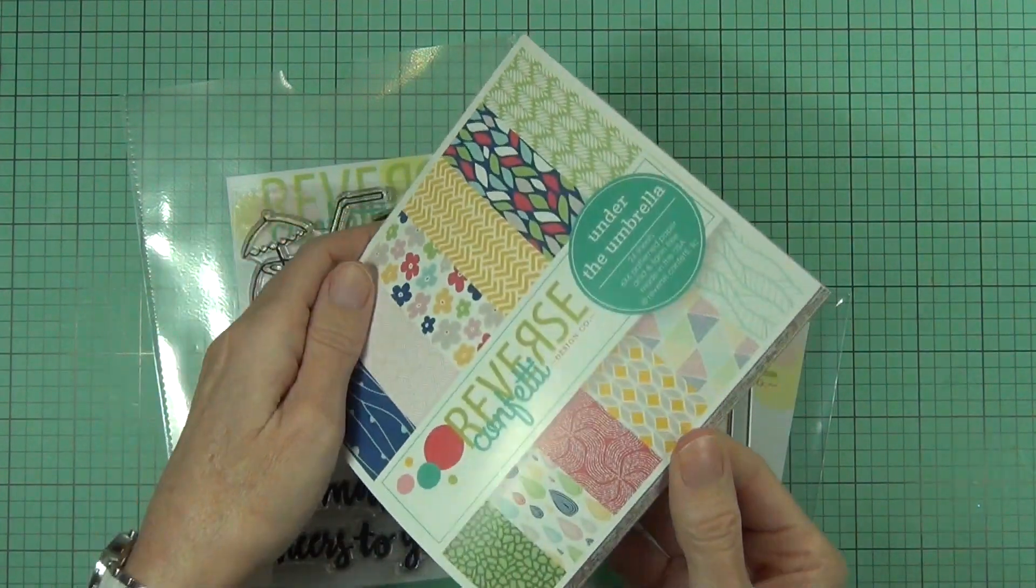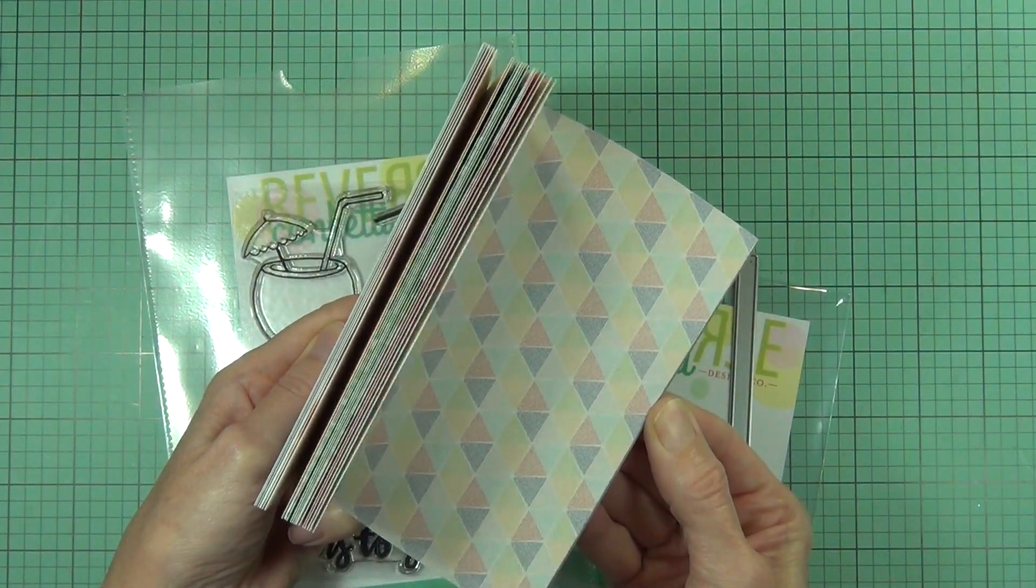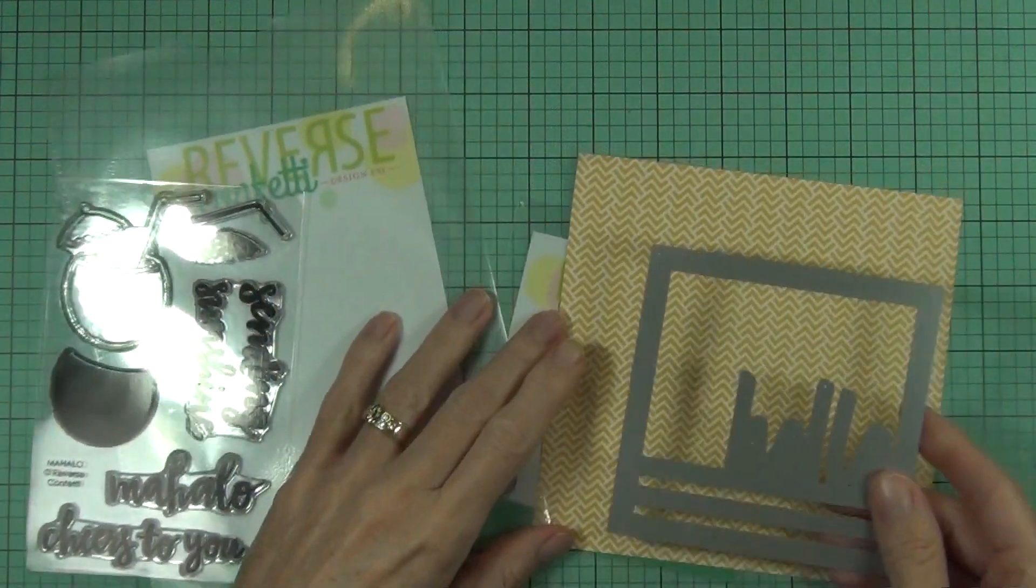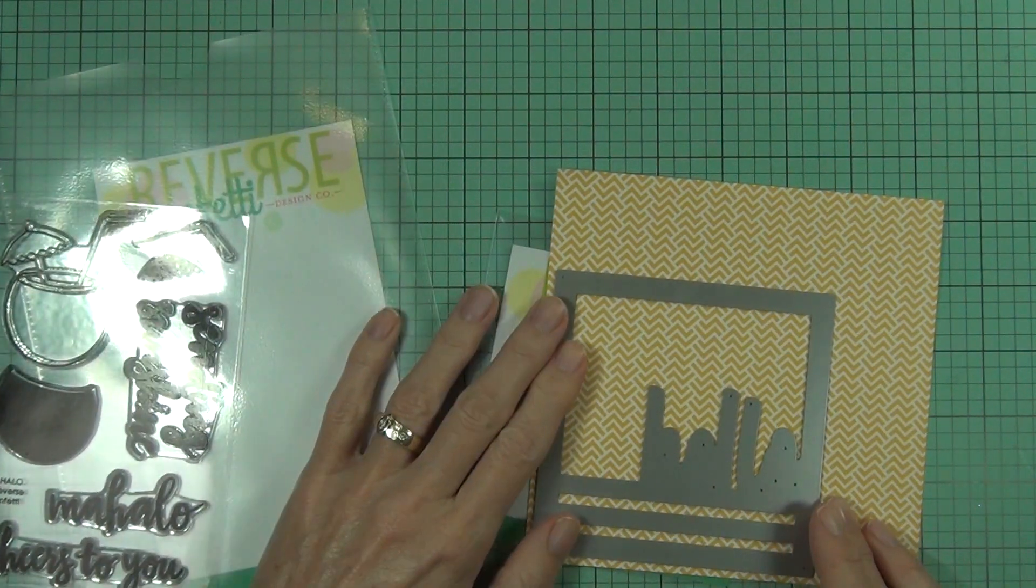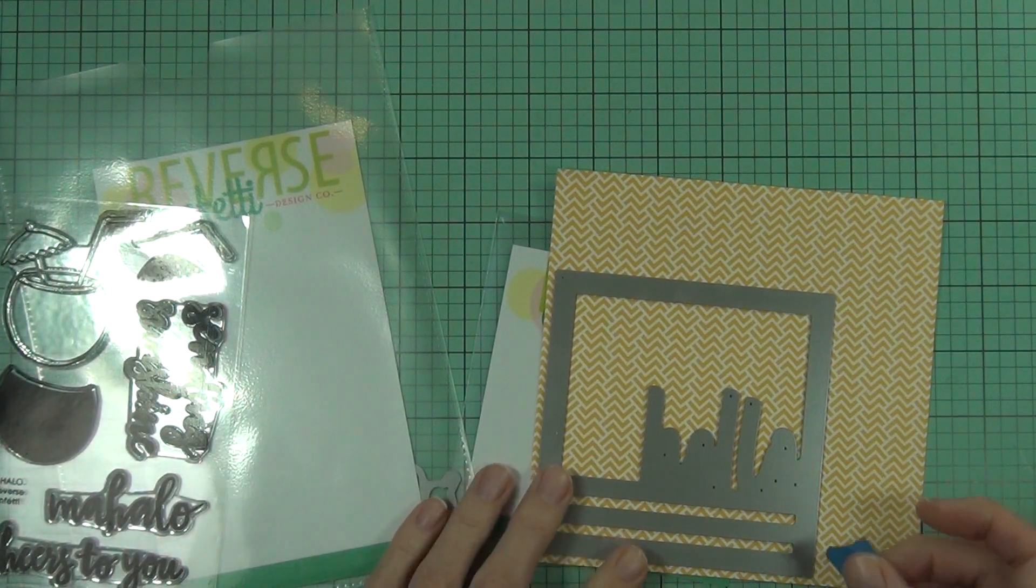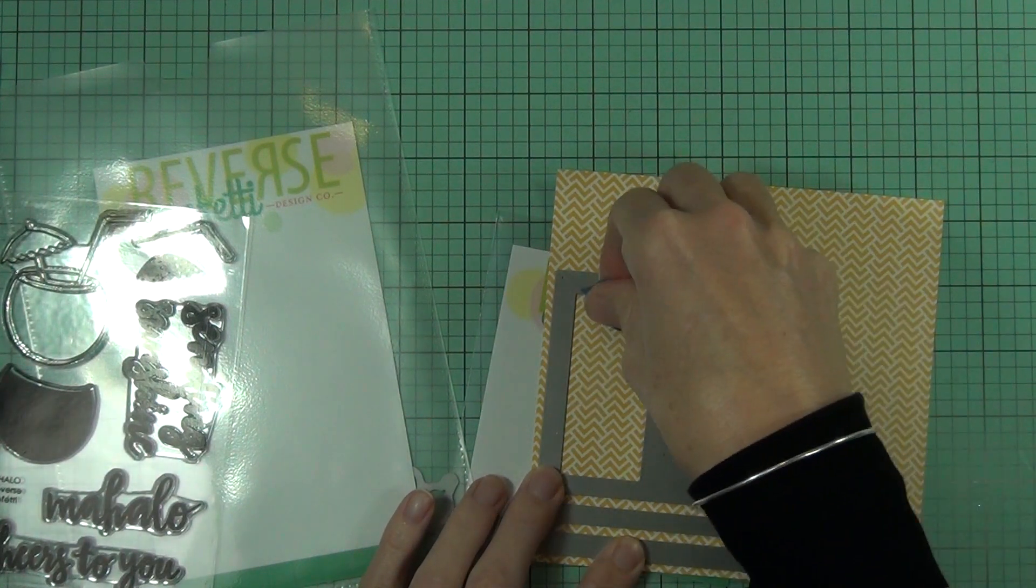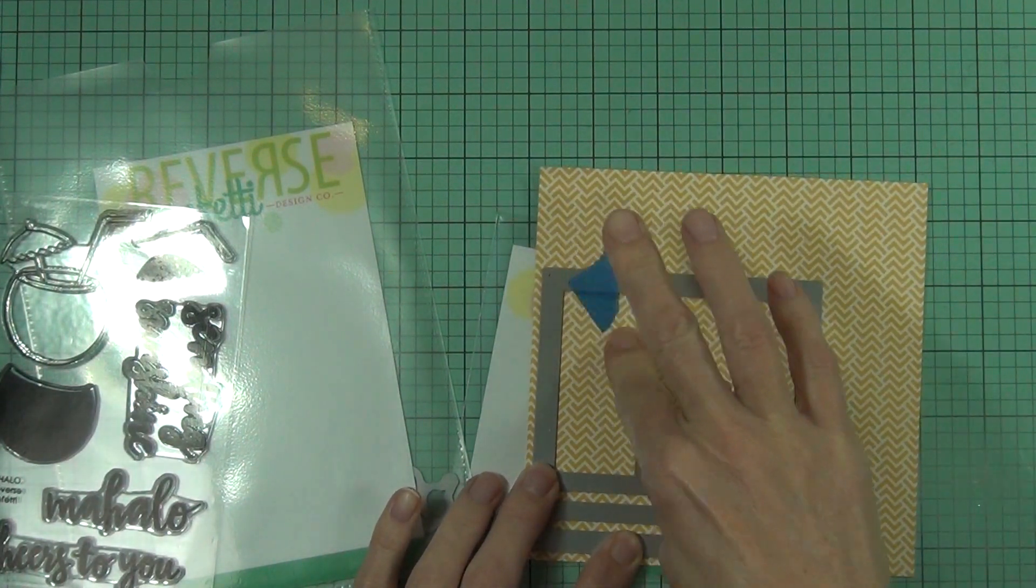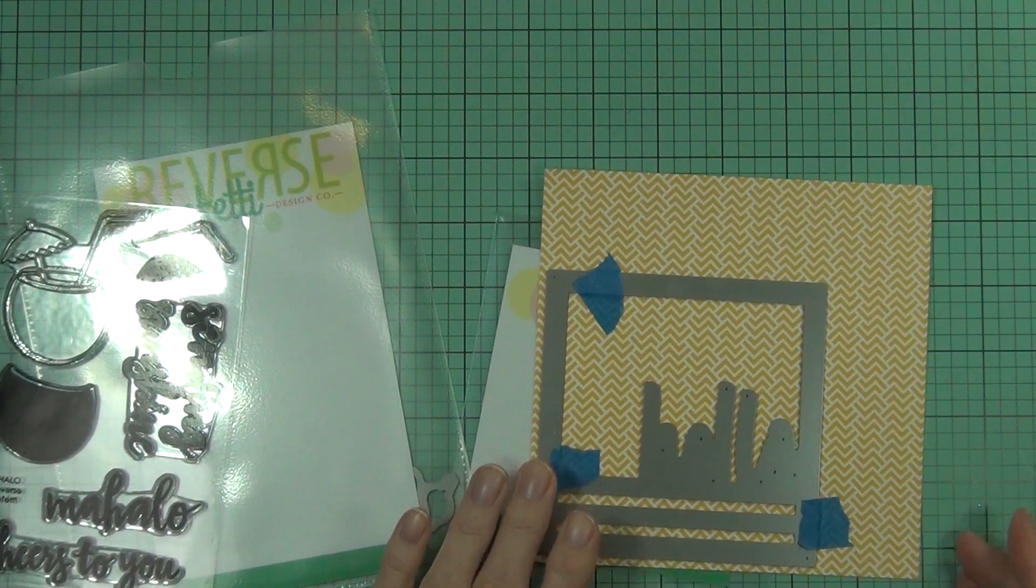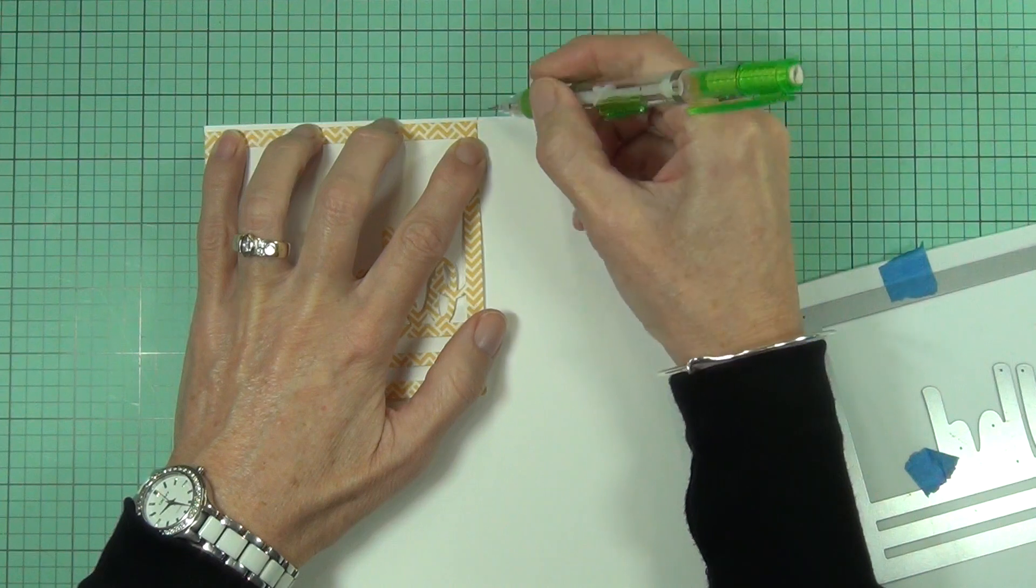I decided to die cut the actual Hello Square out of some design paper. This paper pad is called Under the Umbrella and has some great smaller design patterns, so it's perfect for making cards. I chose a nice bright yellow one because I thought that would work really well with the coconut drink which I'm going to be coloring up today. I really like the fact that this die is the main focus of the card and you can make it as complicated or as simple as you like.